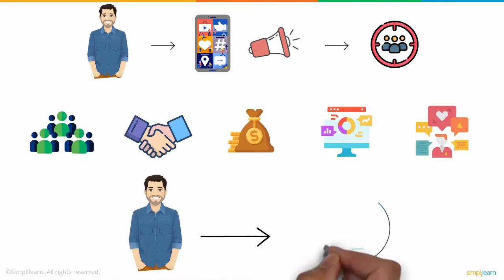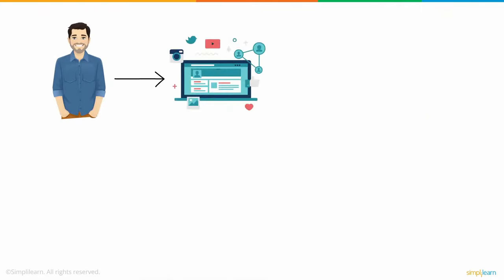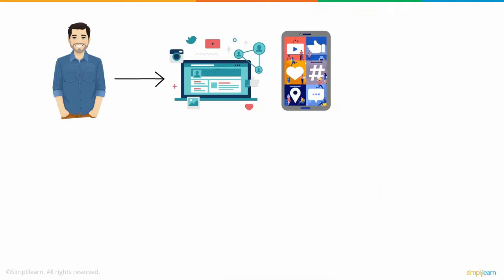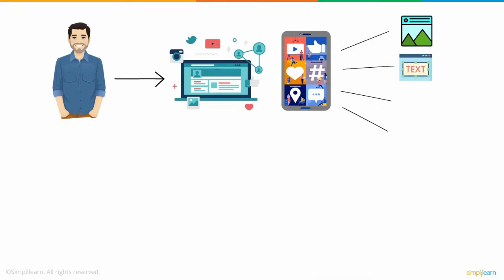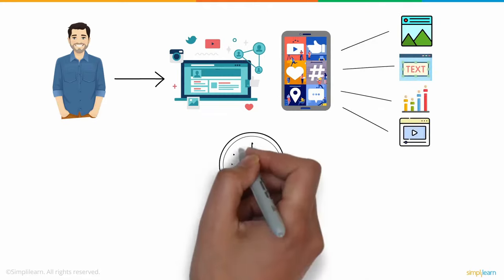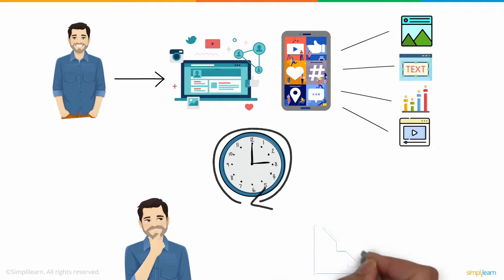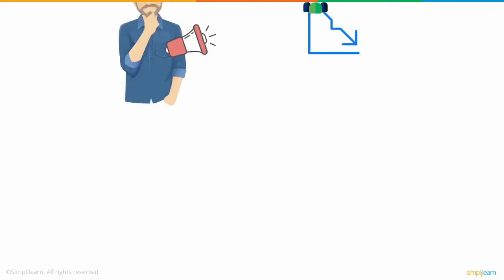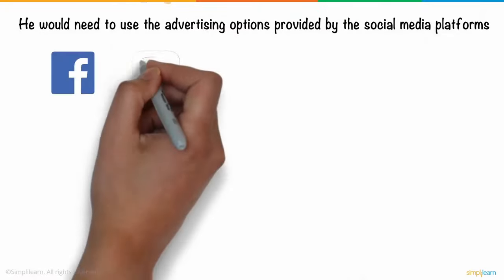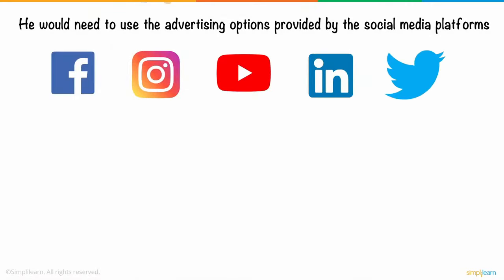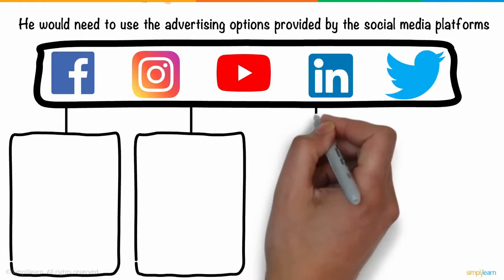Phil started by taking up a certification to learn about social media marketing. His next step was to learn about the different types of content he could post — images, text posts, polls, and videos. Over time, Phil noticed not many people were being exposed to his content, so he needed to advertise using the advertising options provided by platforms like Facebook, Instagram, YouTube, LinkedIn, and Twitter.